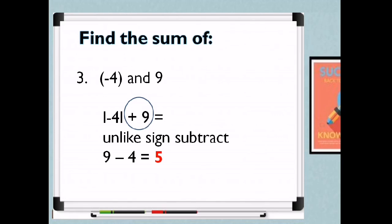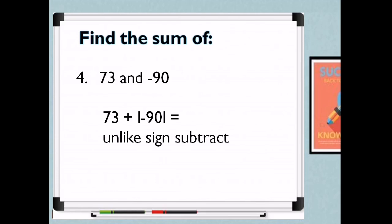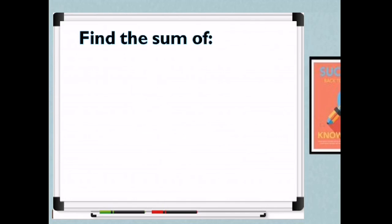For example 4: 73 and negative 90. One is positive and the other is negative. Get the absolute value of negative 90, which is positive 90, then subtract 90 minus 73. Copy the negative sign because 90 is larger than 73 and its sign is negative. So 90 minus 73 equals 17, and the sum is negative 17.